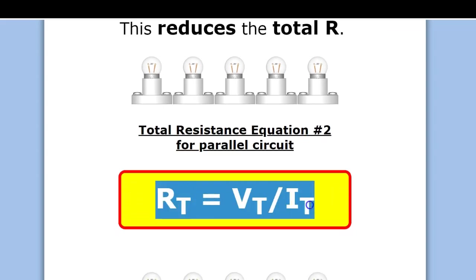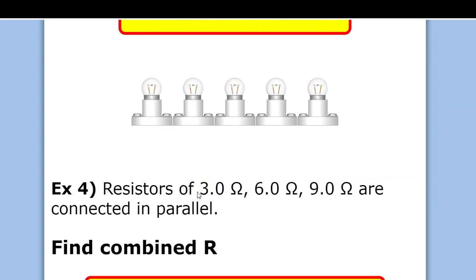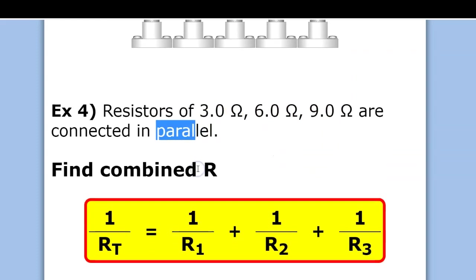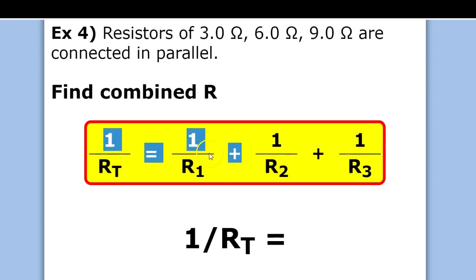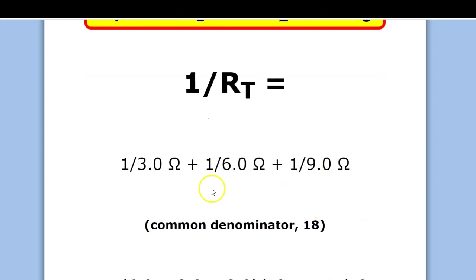Here's a super easy equation: if you've got the total voltage and total current, definitely use that one for the parallel circuit. But sometimes we can't — here the three resistors are 3, 6, and 9 ohms, connected in parallel, so unfortunately we have to use the harder equation: 1 over 3 plus 1 over 6 plus 1 over 9.